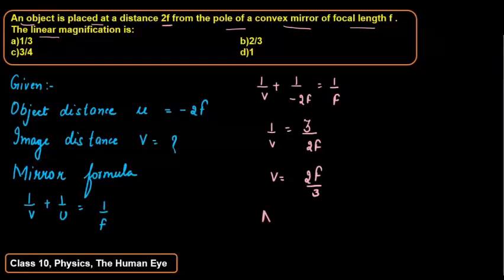Now, if I have V's value, which means the value of the image distance, I will find magnification easily. So magnification, the formula is M equals to minus V upon U.